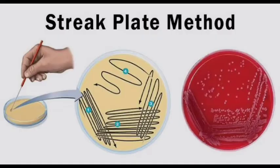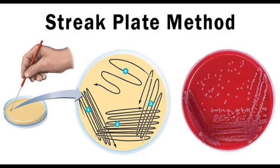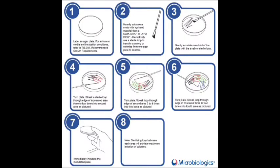The streak plate technique is used to grow bacteria on a growth media surface so that individual bacterial colonies are isolated and sampled. First, label an agar plate. Second, heavily saturate a swab with hydrated material, then use a sterile loop to transfer a colony from one agar plate to another. Third, gently inoculate the plate with a swab or sterile loop three to four times, using a sterile loop for each streak. Lastly, immediately incubate the inoculated plate.